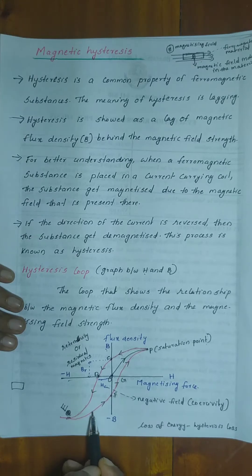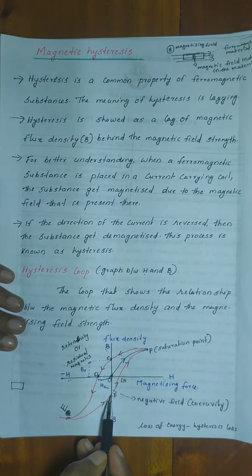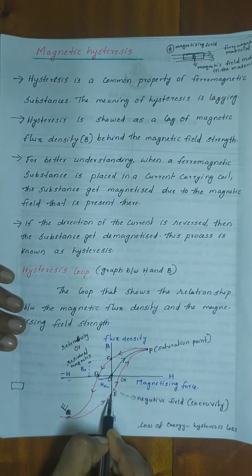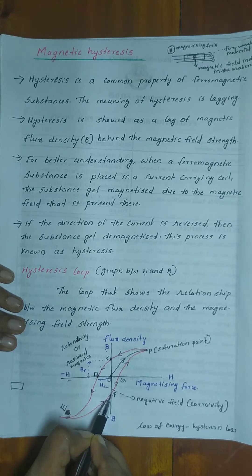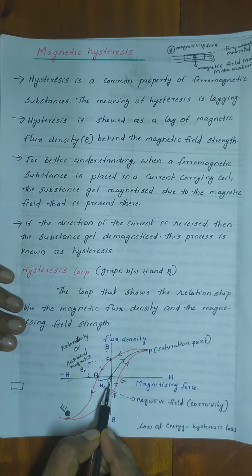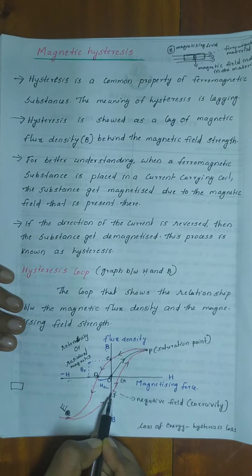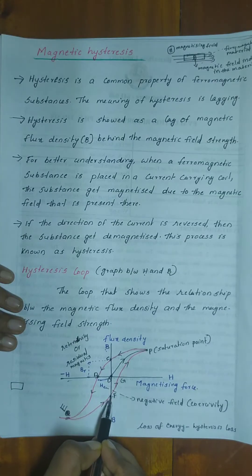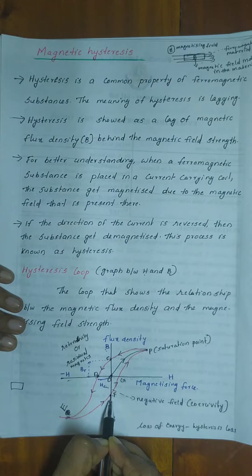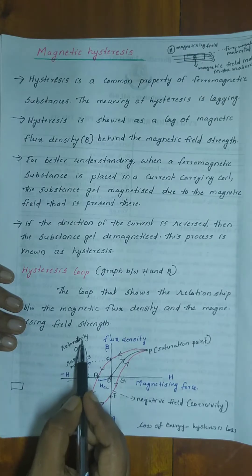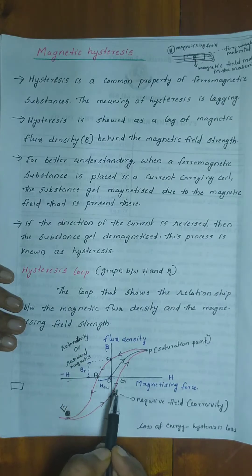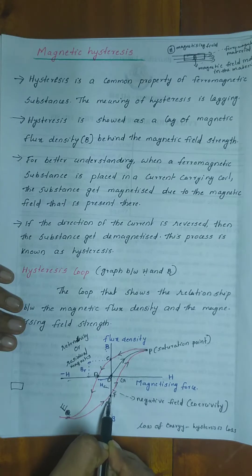As the magnetizing force decreases back to zero from the reverse saturation, a small amount of flux density remains. This is represented by OF on the graph. That retained flux density OF is again the retentivity or residual magnetism in the reverse direction. Retentivity is equal to OC and OF.